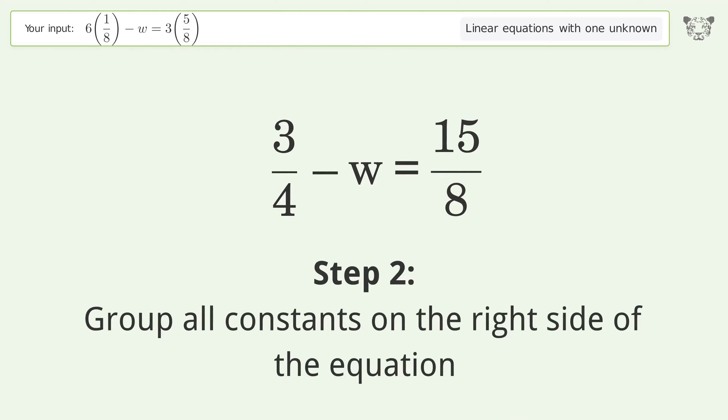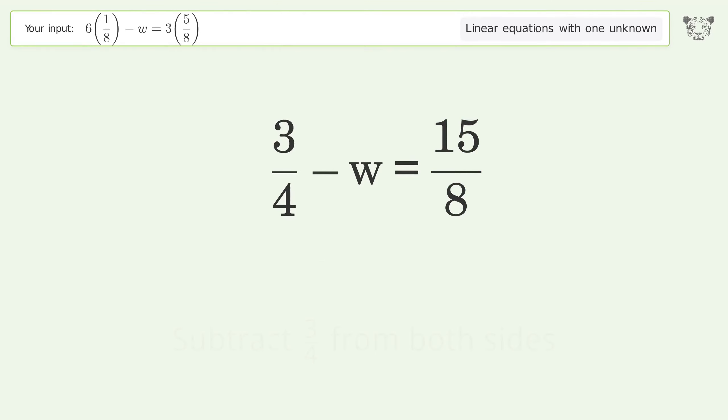Group all constants on the right side of the equation. Subtract 3 over 4 from both sides.